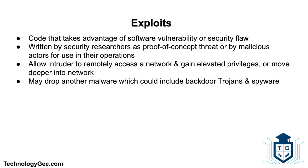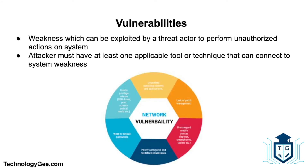An exploit is code that takes advantage of a software vulnerability or security flaw. It is written either by security researchers as a proof of concept or by malicious actors for use in their operations. When used, exploits allow an intruder to remotely access a network and gain elevated privileges or move deeper into the network. An exploit can also drop other malware including backdoor trojans and spyware that can steal user information. A vulnerability is a weakness which can be exploited by a threat actor to cross privilege boundaries or perform unauthorized actions within a computer system; vulnerabilities are also known as the attack surface.